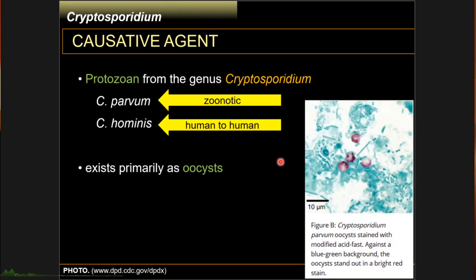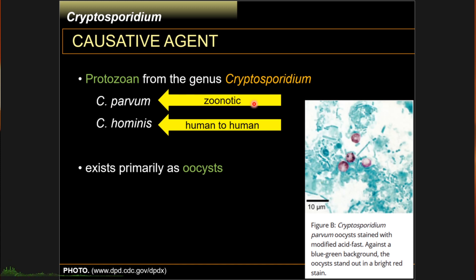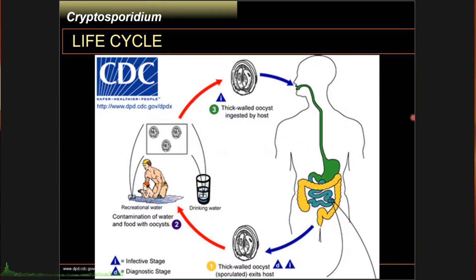The causative agent for cryptosporidiosis is a protozoan from the genus Cryptosporidium. We have two important species to discuss: Cryptosporidium parvum, which primarily causes zoonotic infections, and Cryptosporidium hominis, which is the human-to-human species. This is the life cycle of Cryptosporidium — it has a very simple circular life cycle.